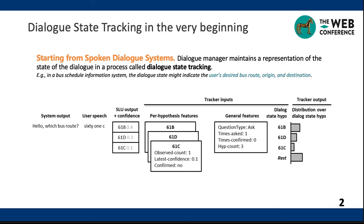The dialogue state tracking task maintains a representation of the state of the dialogue. For example, in a bus schedule information system, the dialogue state might indicate the user's desired bus route, origin, and destination. Starting from spoken dialogue systems, the task in early days was difficult mainly because automatic speech recognition and spoken language understanding errors are common. Therefore, it tends to work on single-domain settings with small, fixed ontology.